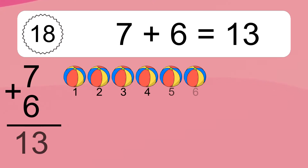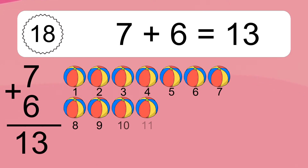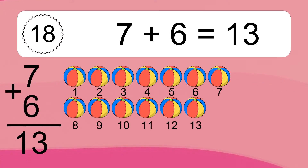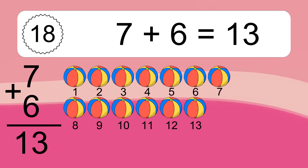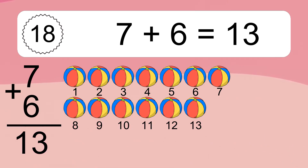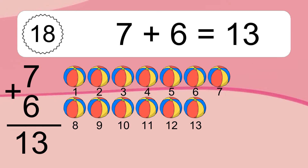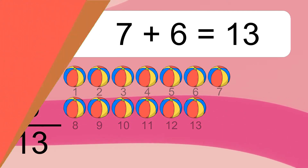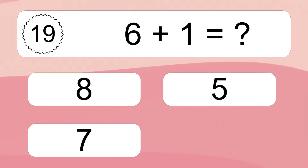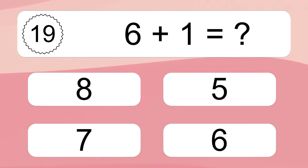7 plus 6 equals 13. Let's count it: 1, 2, 3, 4, 5, 6, 7, 8, 9, 10, 11, 12, 13. 6 plus 1 equals what?